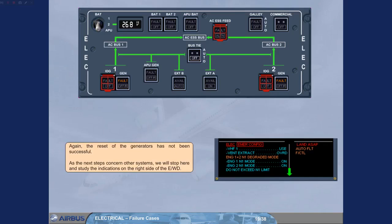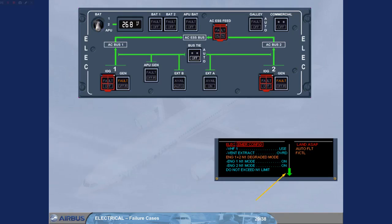As the next steps concern other systems, we will stop here and study the indications on the right side of the engine warning display. Notice the green arrow — it indicates that other failure messages and their associated procedures are stacked after the EMER config one. The list of affected systems is displayed on the right engine warning display memo.